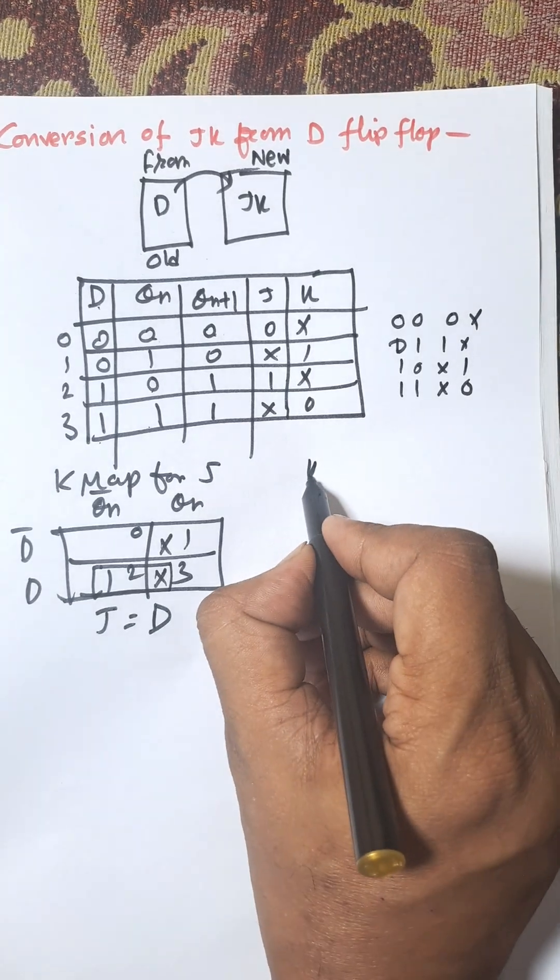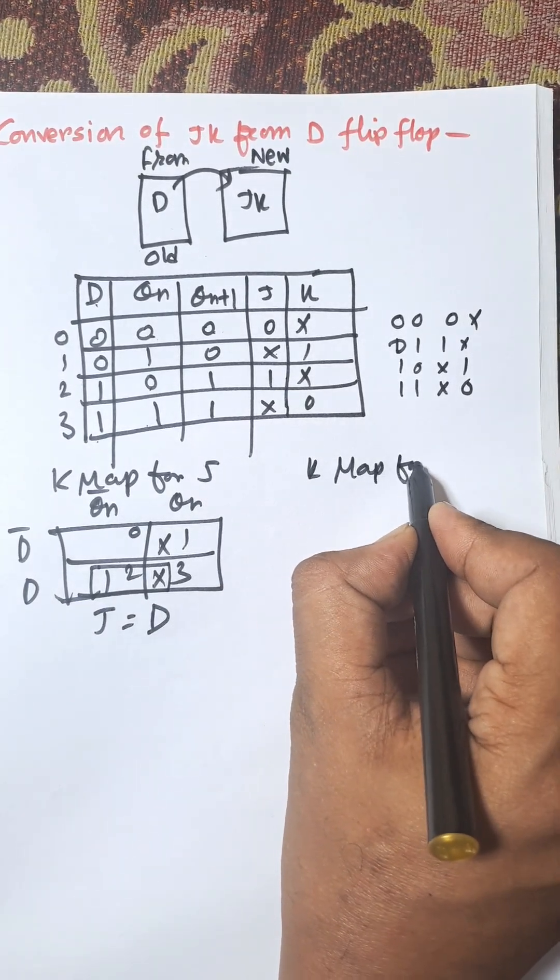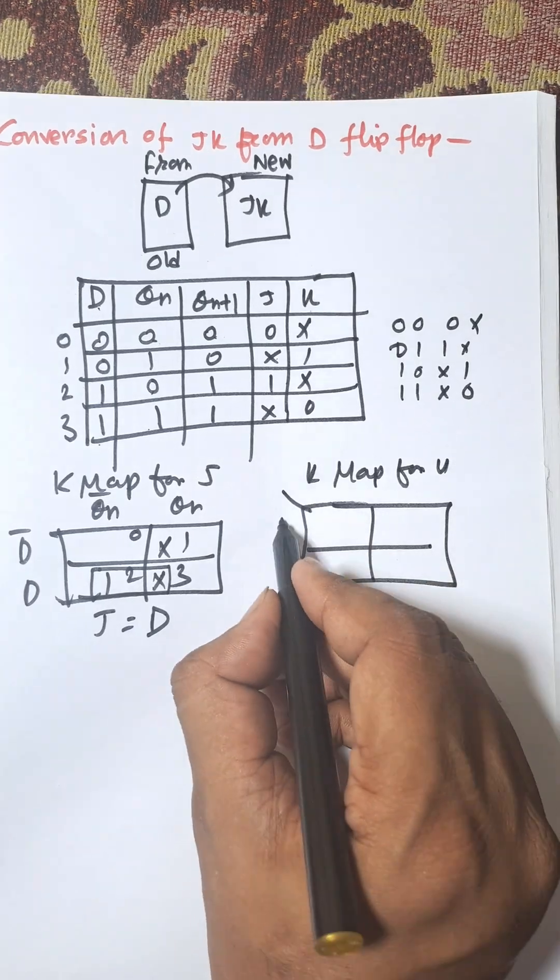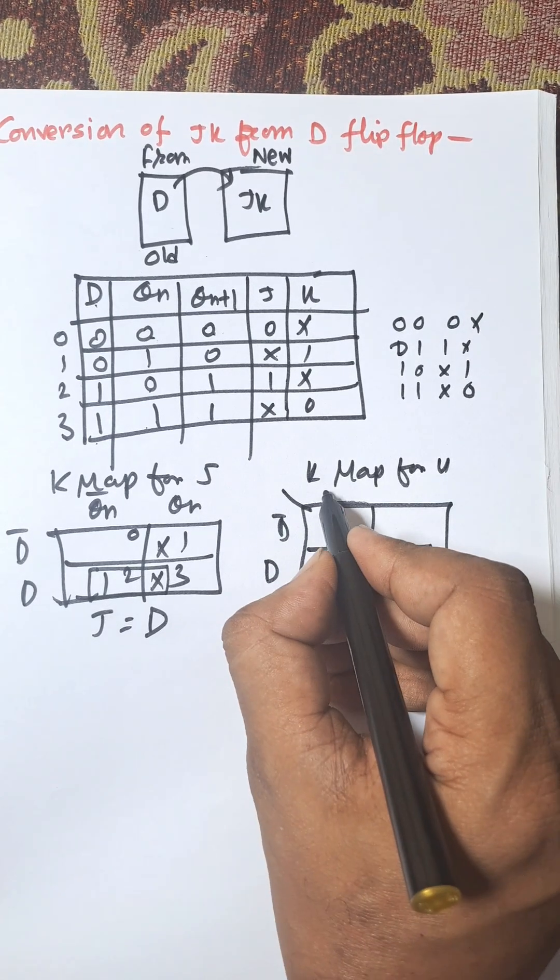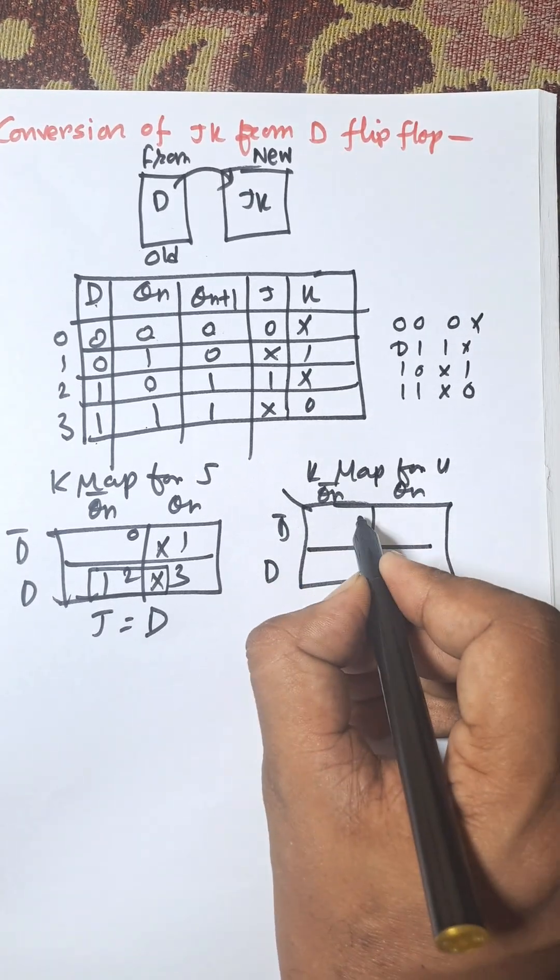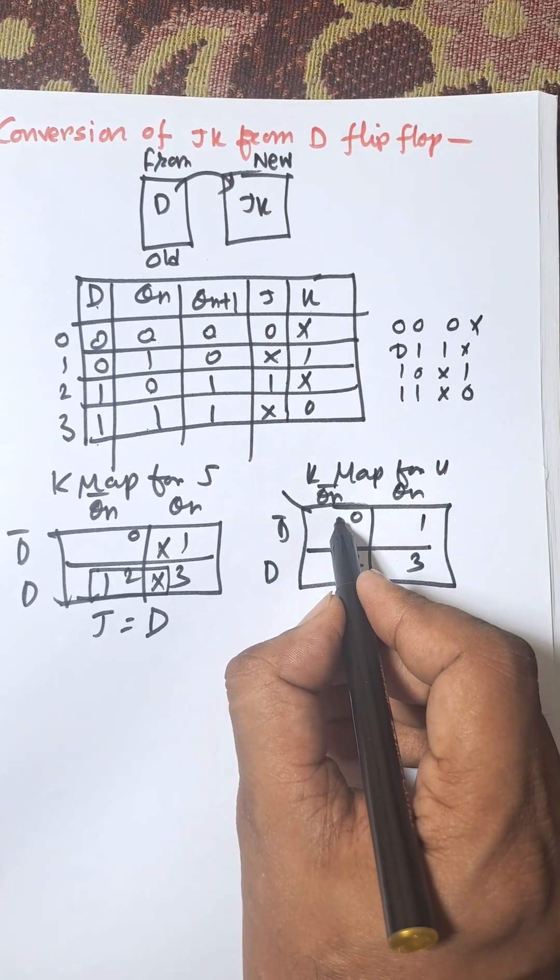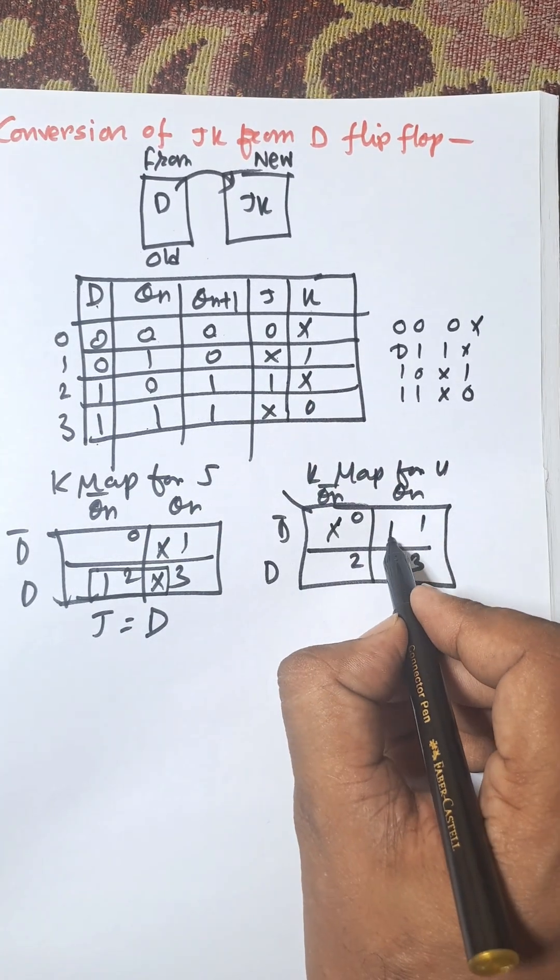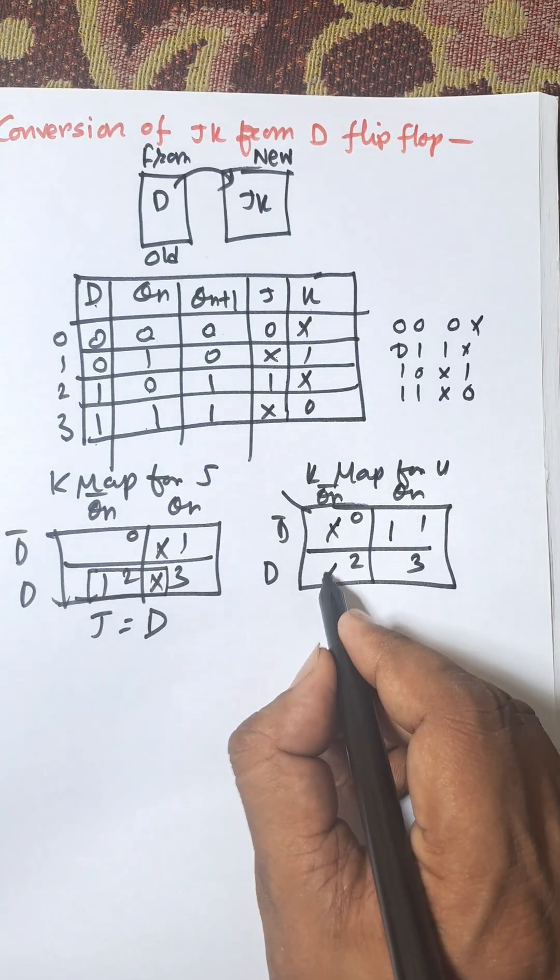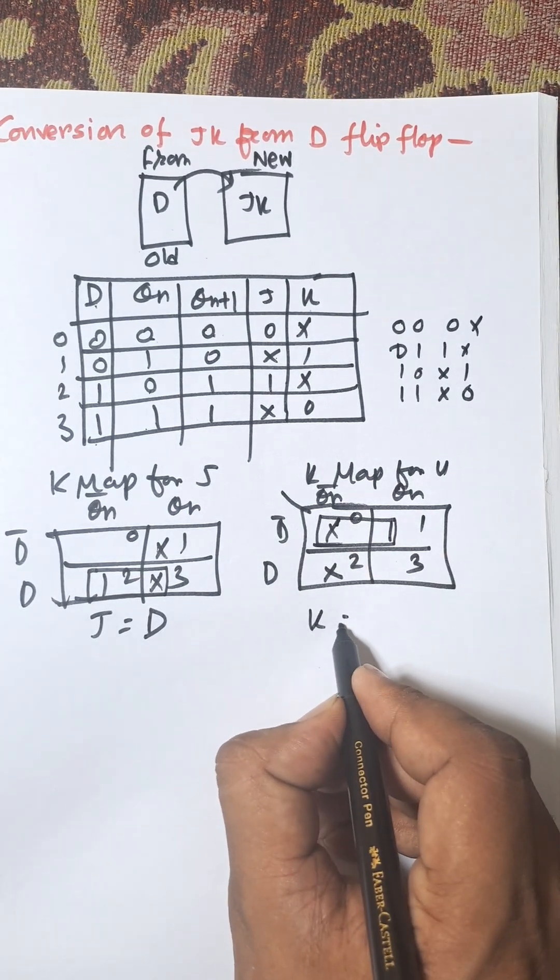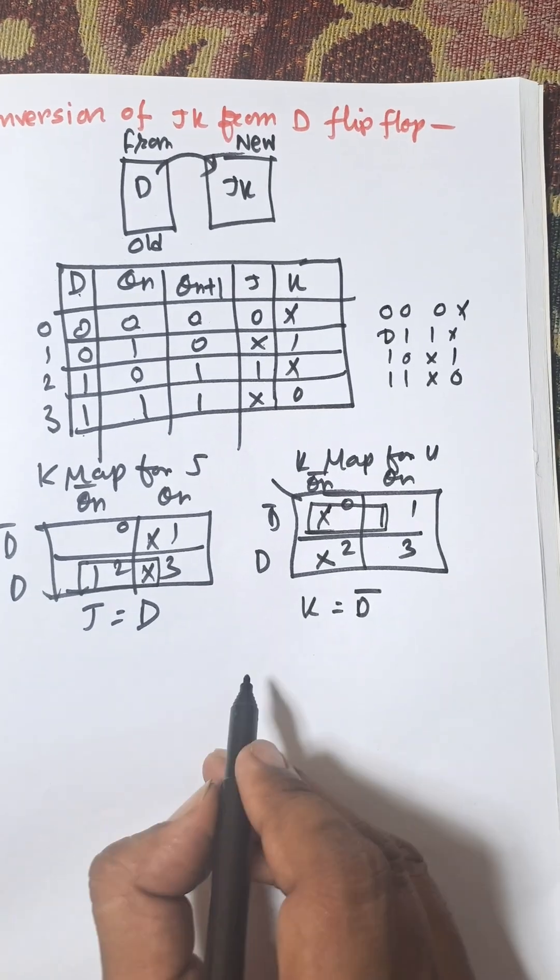Now K-map for K. Again we need to construct the two variables K-map. This is D bar and D, this is Qn bar, Qn: 0, 1, 2, 3. In X, 0, X, X means don't care, 1 is 1, 2 is X. Grouping this, we will get K equal to D bar.